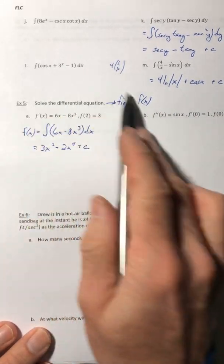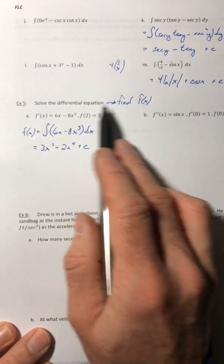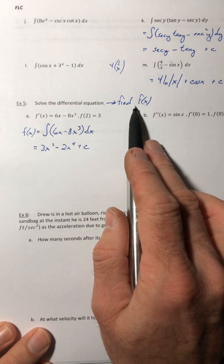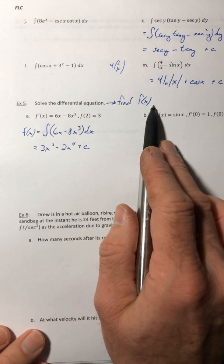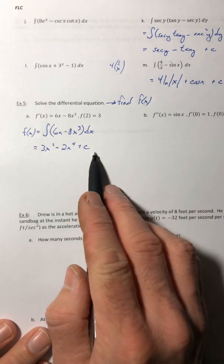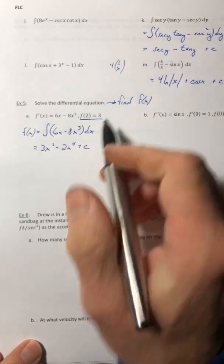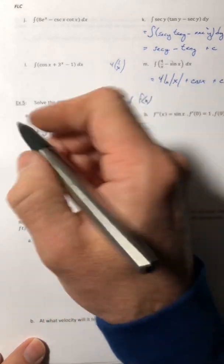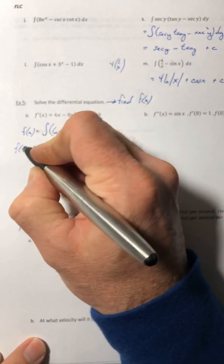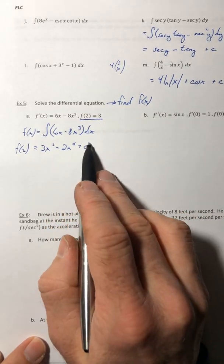So in the previous problems you were done, but we have different instructions. You have to solve the differential equation. So you're looking for the exact f of x. So don't stop here because your job now is to figure out the plus c. And that's why they gave you this little piece of data right there. So again, this is your f of x. So now you have to use this info to solve for the c.